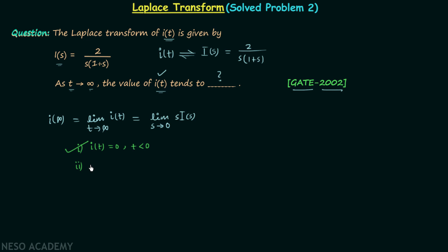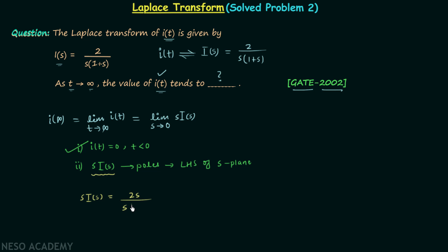We move directly to condition number 2: the frequency domain signal S·I(S) should have all poles located on the left hand side of the S-plane. Our first task is to find S·I(S) by multiplying S on both sides. So S·I(S) equals 2S in the numerator and S multiplied by 1 plus S in the denominator. S in numerator and denominator cancel, giving us 2 over 1 plus S.